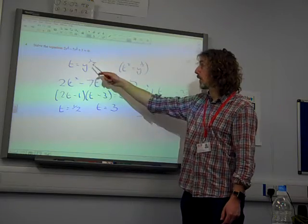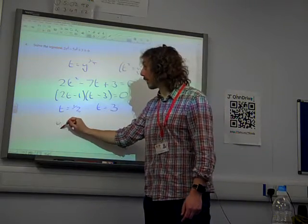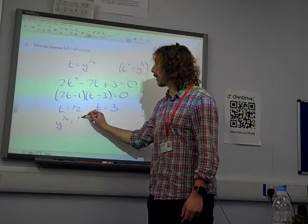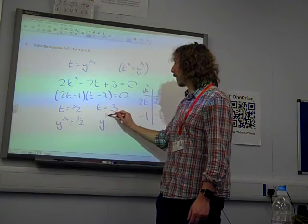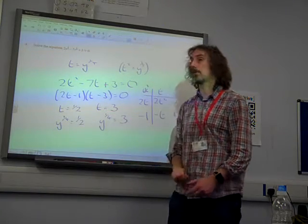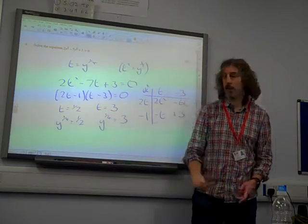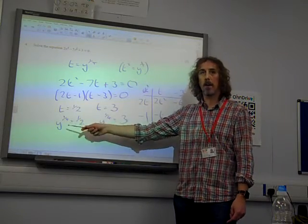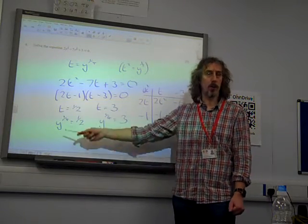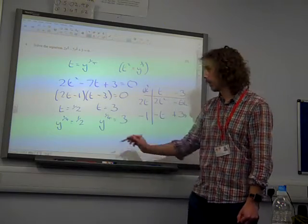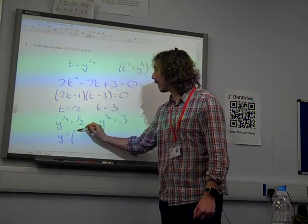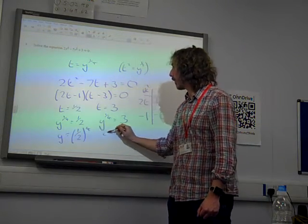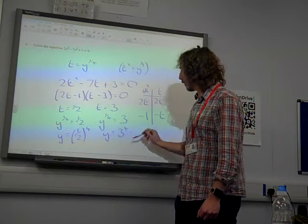So t is y to the quarter. y to the power of a quarter is equal to a half, and y to the power of a quarter equals 3. That means the fourth root of y is a half. So to undo the fourth root, you would raise it to a power of 4. y is a half to the power of 4, and y is also 3 to the power of 4.